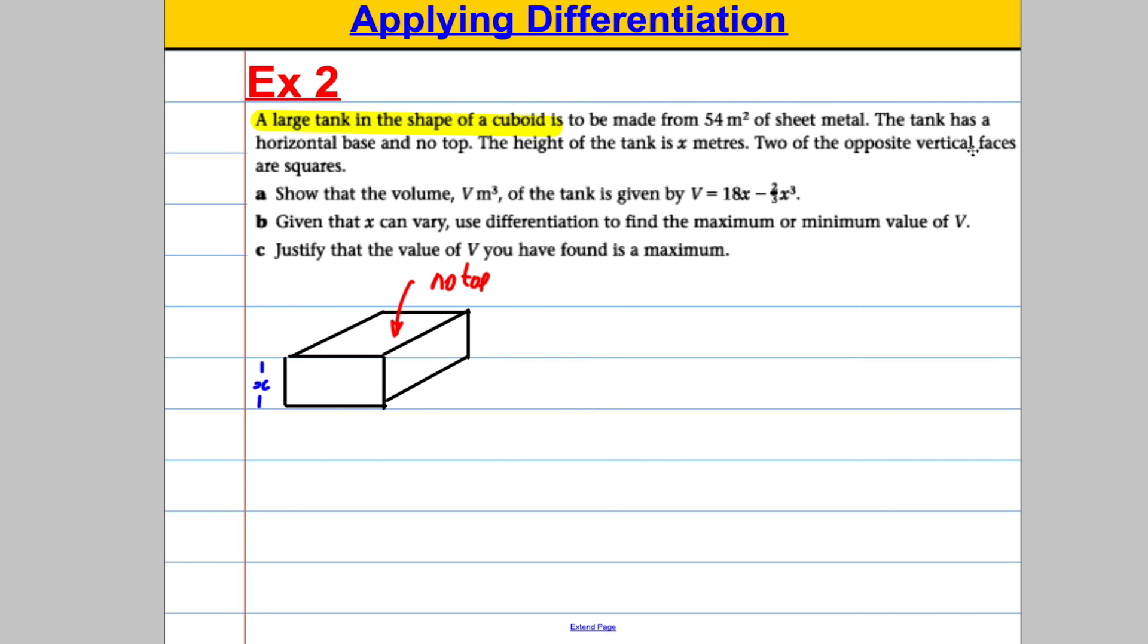Two of the opposite vertical faces are squares. So actually, this needed to be a square. I'm just going to readjust my picture to make it look more like a square now. That looks slightly more like a square. So clearly, if that's x here, for this to be a square, that has to be x. So the area of this must be x squared.